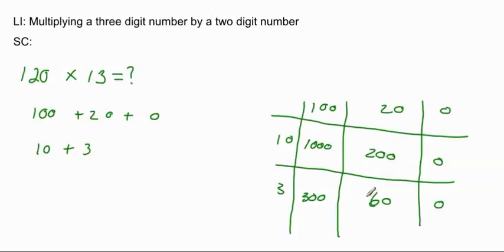And now we just add up these numbers that are in the grid here. So, it would be 1,000, let's write it over here, 1,000 plus 200 plus 300 plus 60, and then we don't need to worry about the zeros.